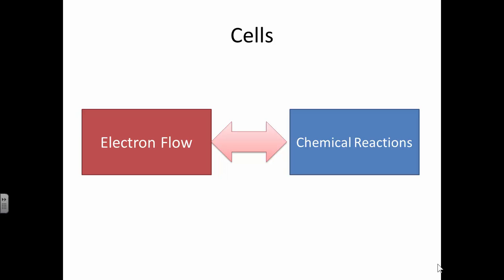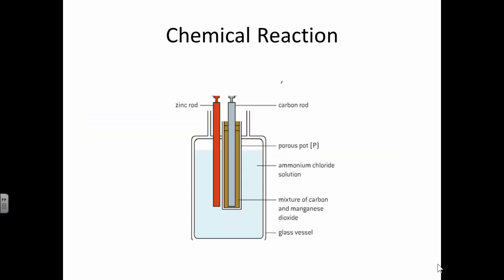A chemical reaction takes place and you have a transfer of electrons. This is the chemical process that we have. We have a cell and in this cell we have some chemicals that are going to react. For example we have carbon and manganese dioxide.